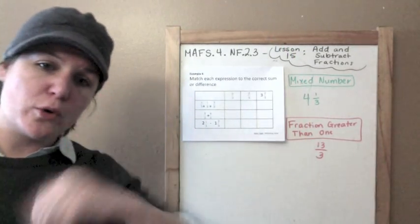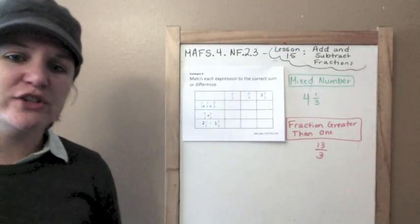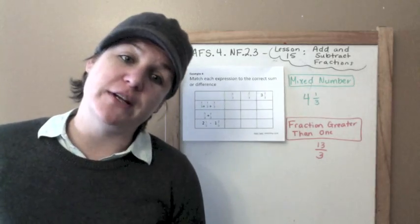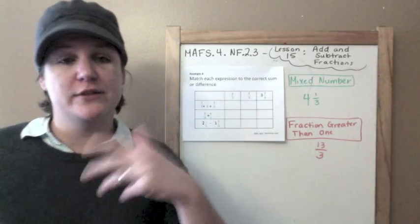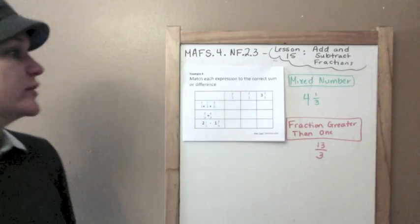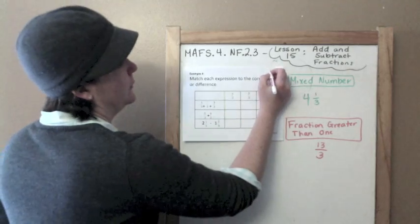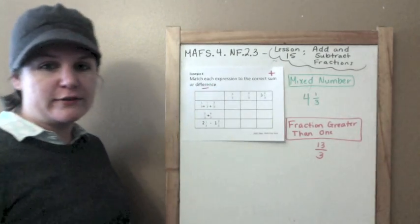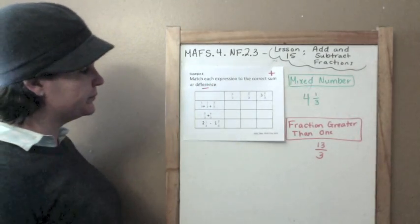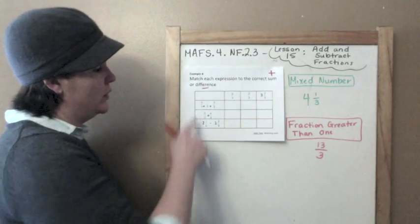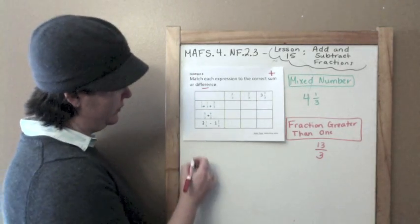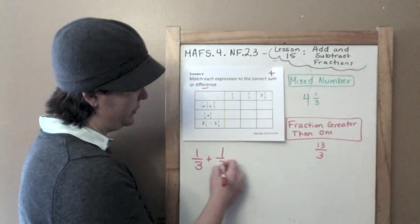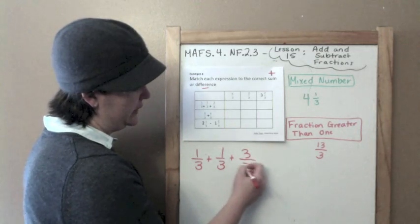Example four: match each expression to the correct sum or difference. Sum means we're adding, and difference means we're subtracting. So we have one-third plus one-third plus three-thirds.